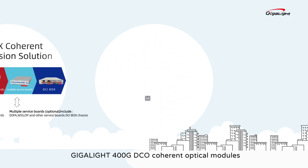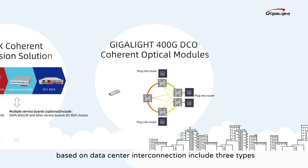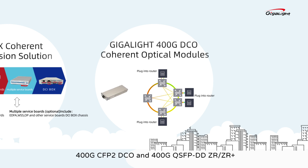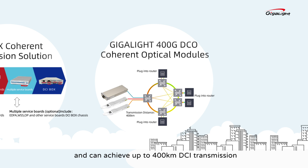Gigalight's 400G DCO coherent optical modules based on data center interconnection include three types: 400G CFP2 DCO and 400G QSFP-DD ZR/ZR Plus, which use full C-band tunable DWDM wavelength and can achieve up to 400 km DCI transmission.